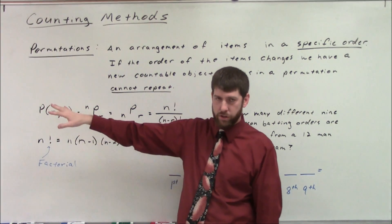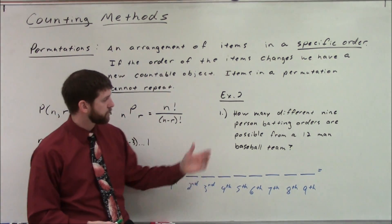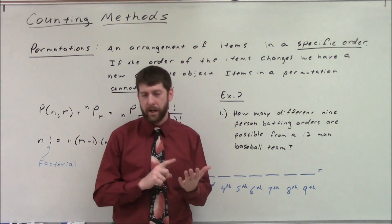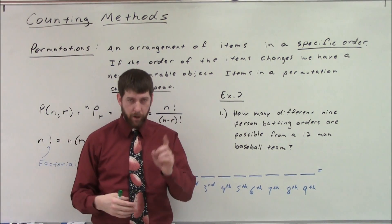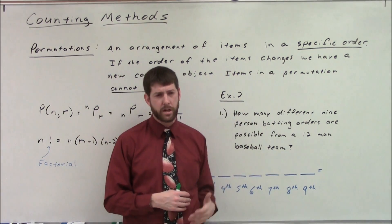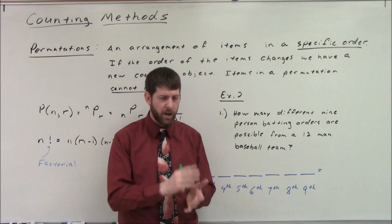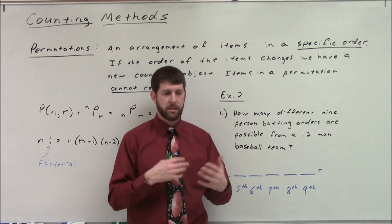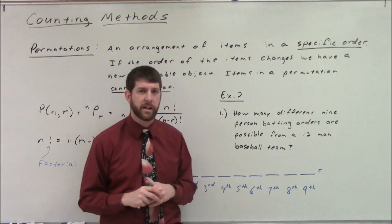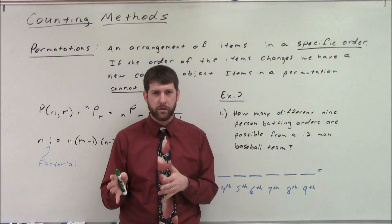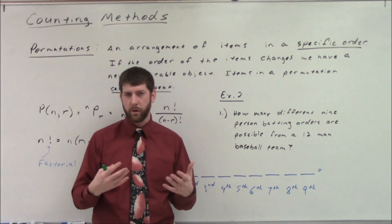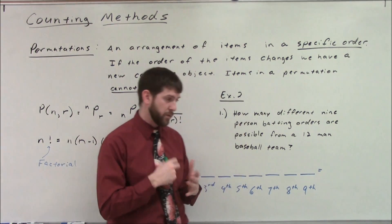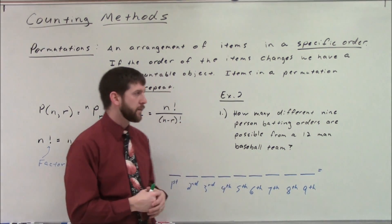Let's look at the example: how many different nine-person batting orders are possible from a 12-man baseball team? We know items can't repeat — one person can't bat first and also bat seventh — and order matters here. This is position-specific. Think of it like class president, vice president, secretary, treasurer — the same four people with different titles gives you a different cabinet every time. If position matters, it's a permutation.